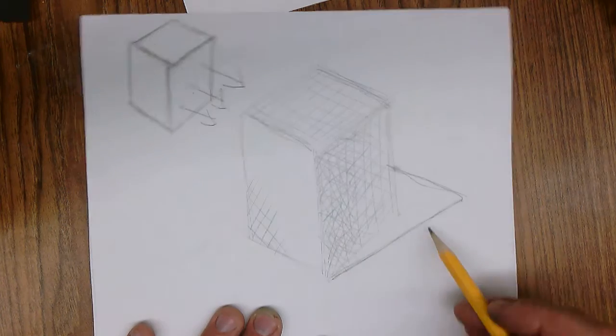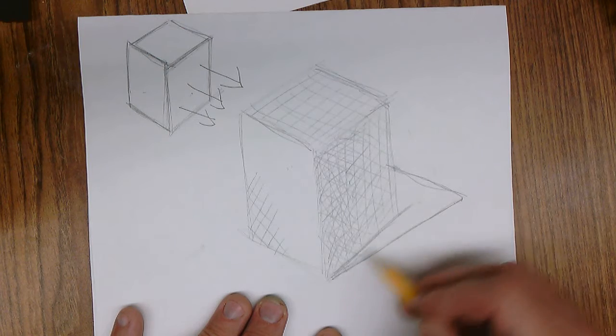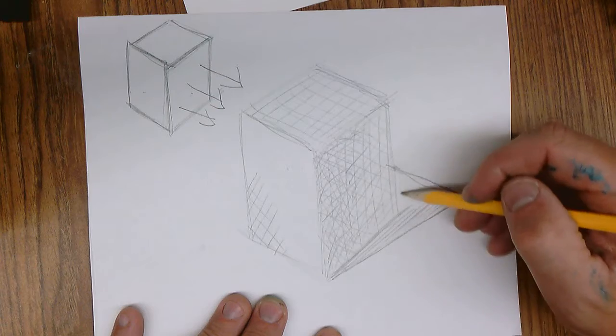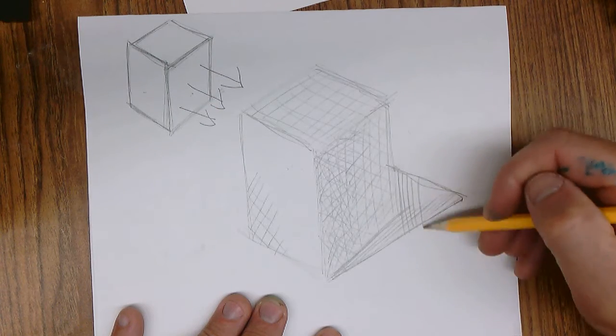And then the final area, area number five, the cast shadow, is going to be super dark, a lot of cross hatching.